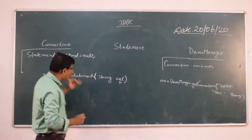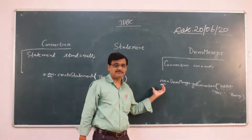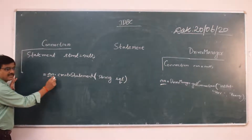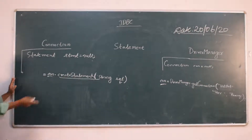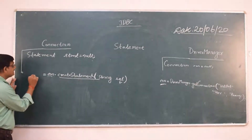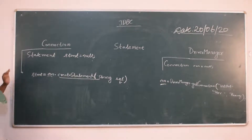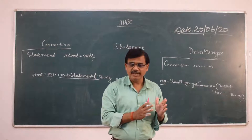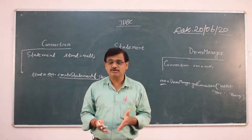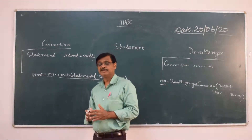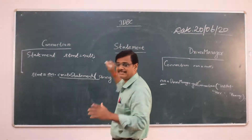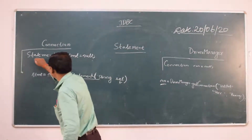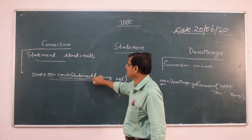The object we use to call createStatement() is the Connection object, because that object contains the connection details. Using that Connection interface object, we create the statement for that particular connection, and it returns that statement as an object of the Statement interface. So we have now completed two steps: first, we create the connection; second, we create the SQL statement. Now we need to execute that statement using the Statement interface.